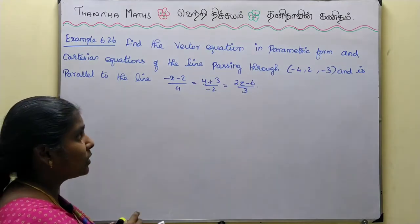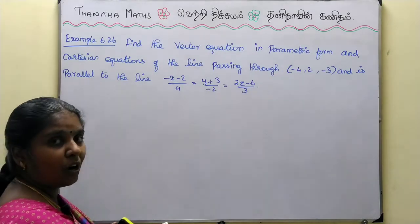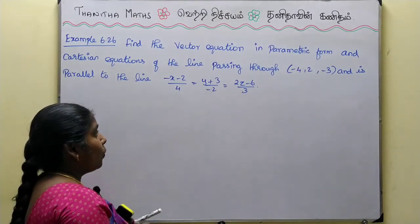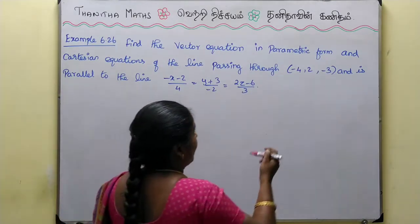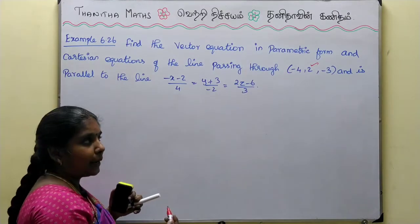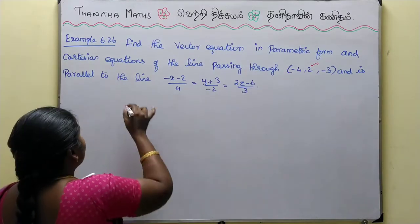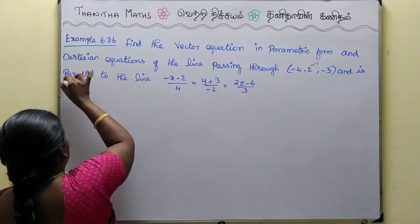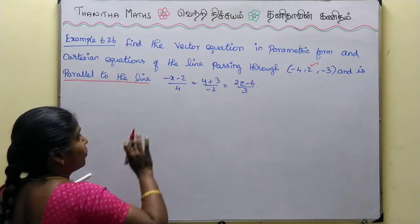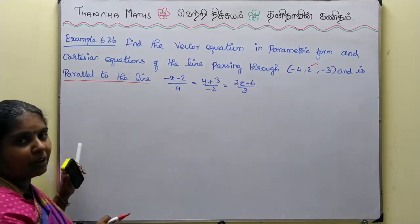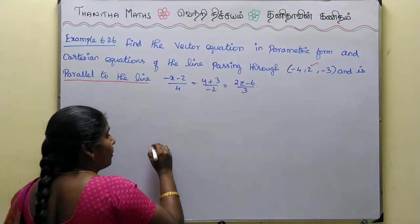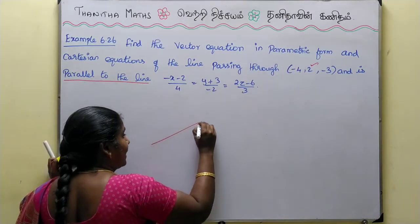We will get the vector equation, parametric form, and Cartesian equation. We will get the point (-4, 2, -3) and get the point parallel to the line, then get the equation in Cartesian format.